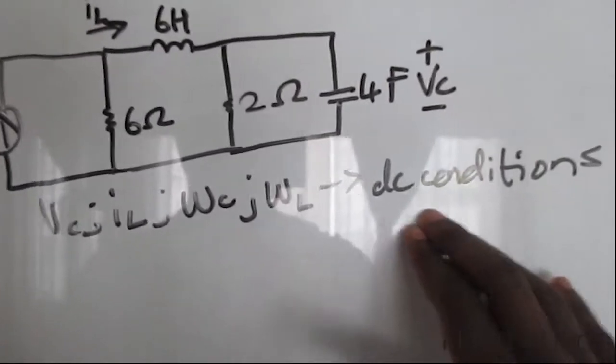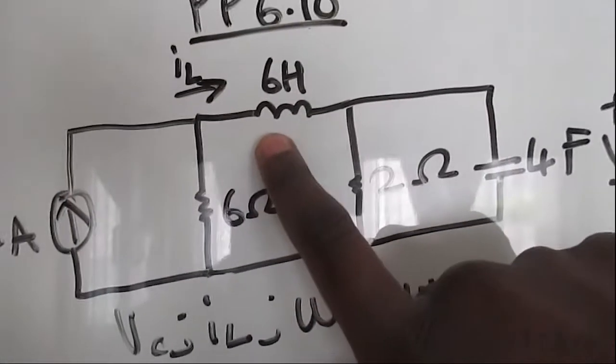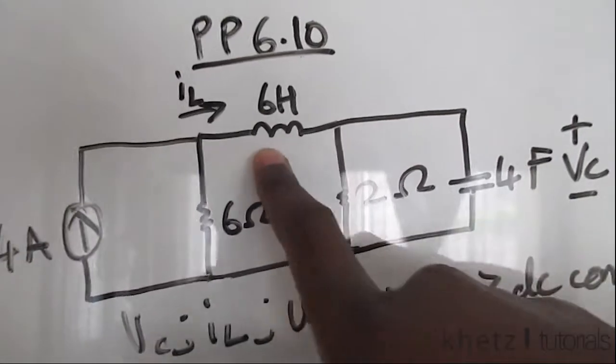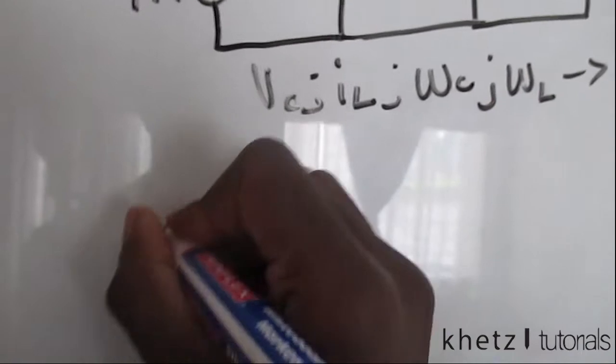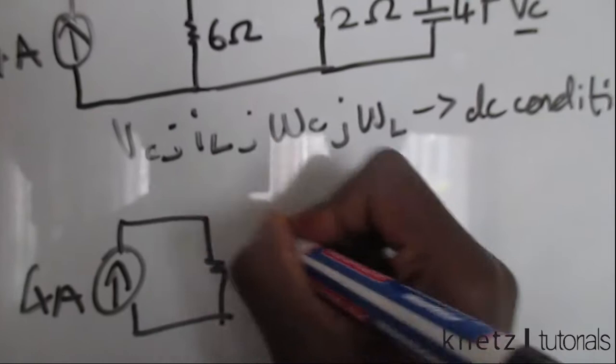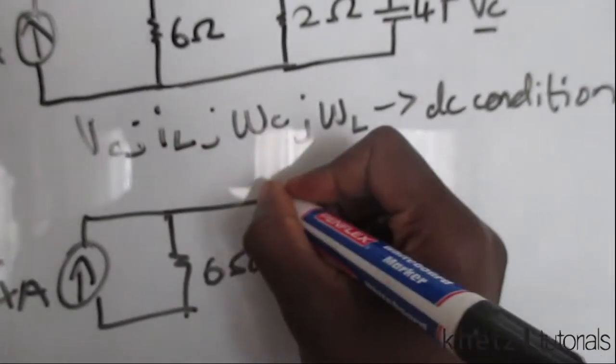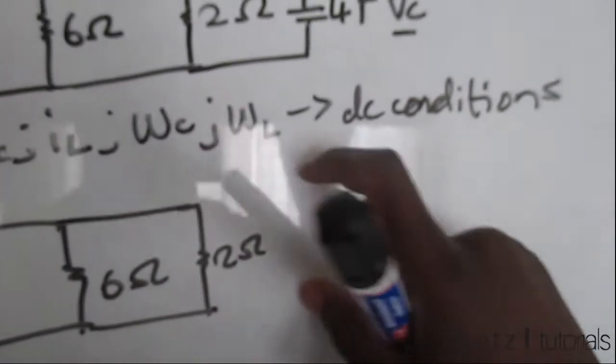Under DC conditions, the capacitor becomes an open circuit and the inductor becomes a short circuit. So this is the resulting circuit. This is what we're basically going to have - that becomes a short and that becomes an open circuit, which means you can basically omit it.